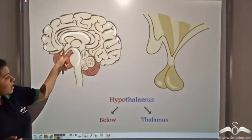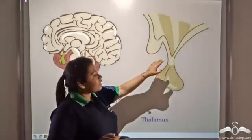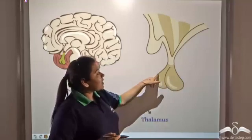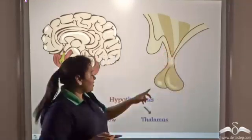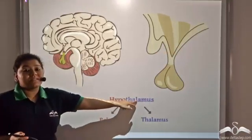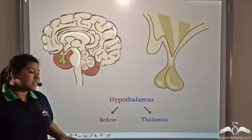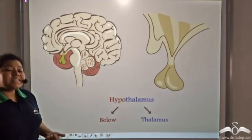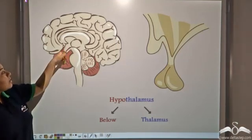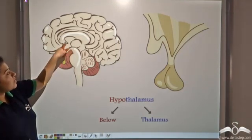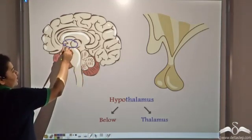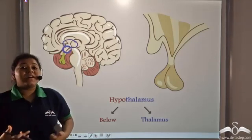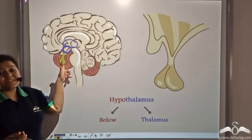Well, this part — if you enlarge it, you can see the pituitary gland hanging from this part of the brain which is known as the hypothalamus. Why hypothalamus? Because it is placed below the thalamus. This part of the brain is the thalamus, and this is the hypothalamus which controls the pituitary gland.